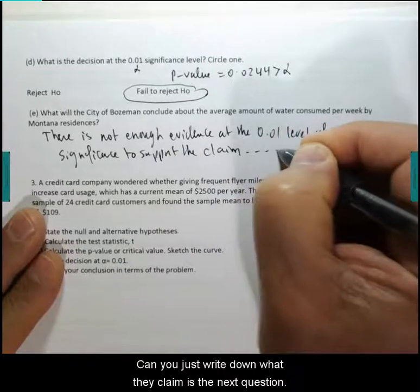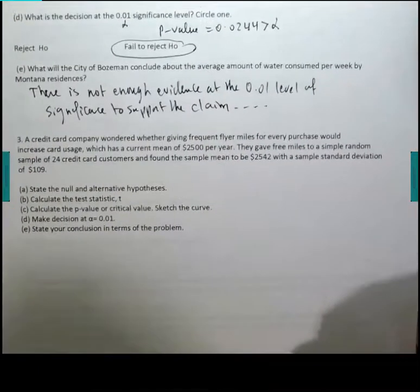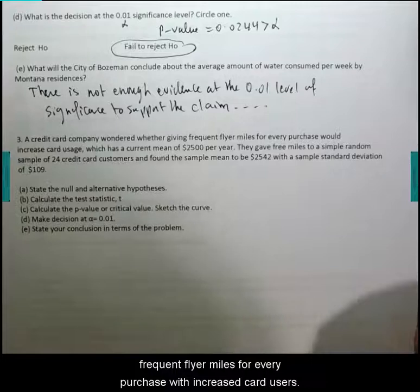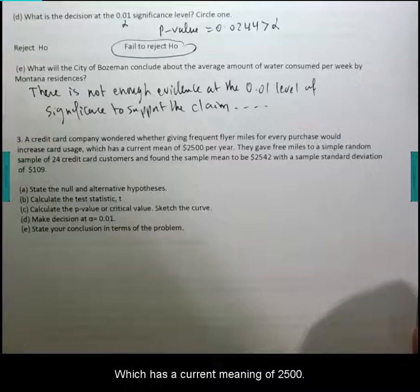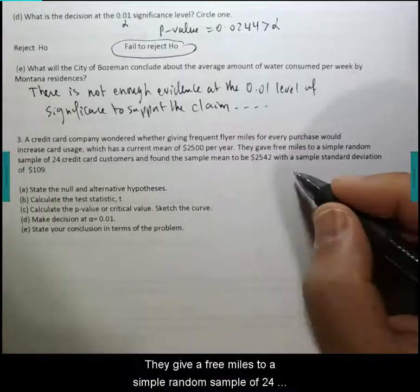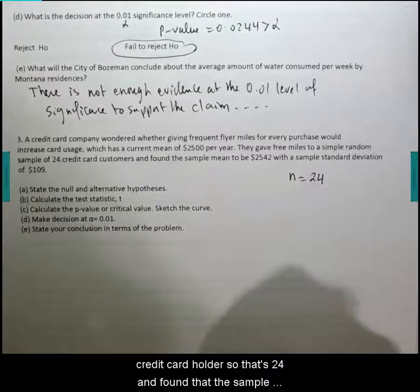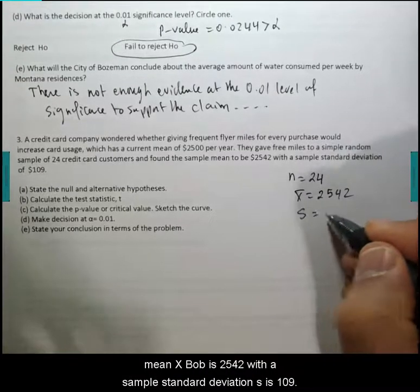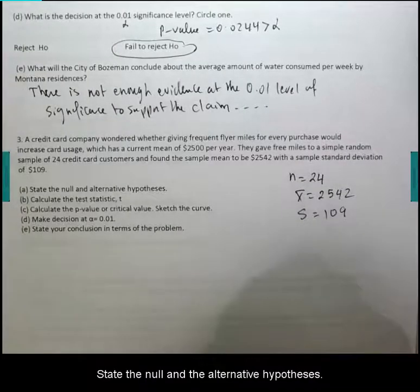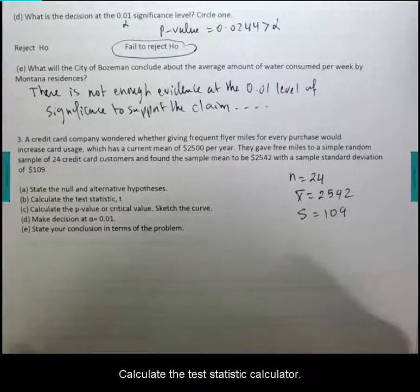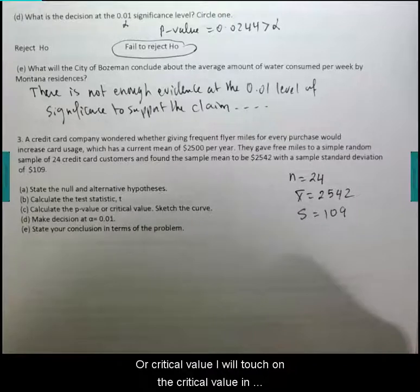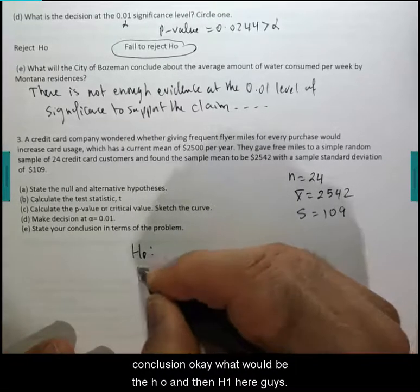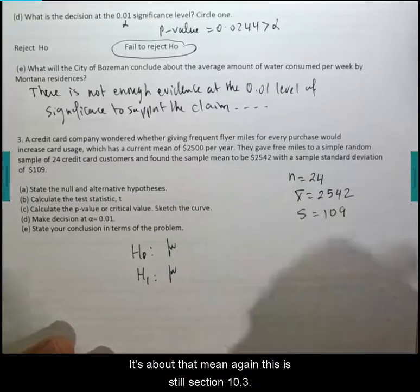Here's the next question. A credit card company wondered whether giving frequent flyer miles for every purchase would increase card usage, which has a current mean of $2500 per year. They gave free miles to a simple random sample of 24 credit card holders and found that the sample mean x-bar is $2542 with a sample standard deviation s of $109. State the null and alternative hypotheses, calculate the test statistic, calculate the p-value or critical value. Make a decision and then state your conclusion. This is still section 10.3.